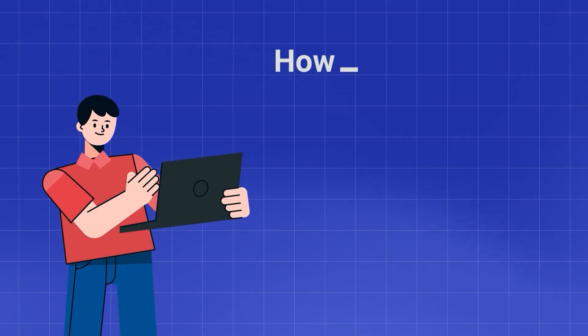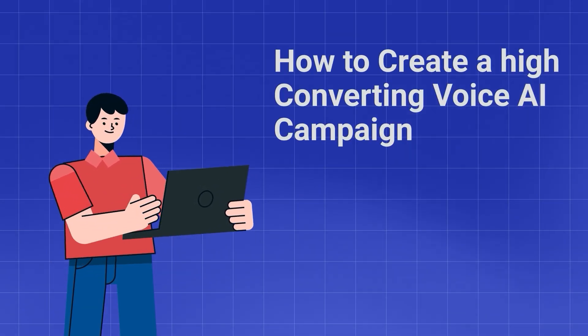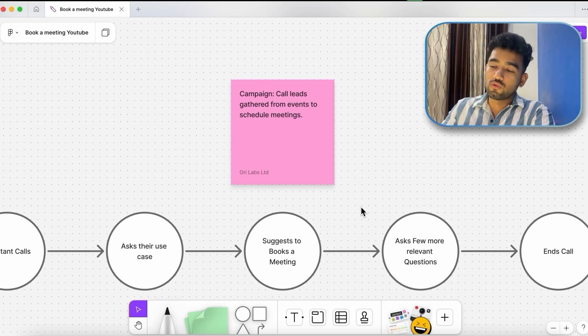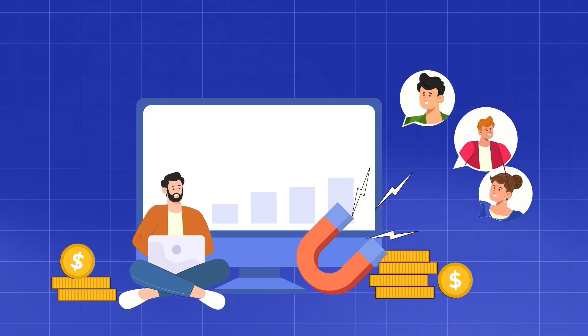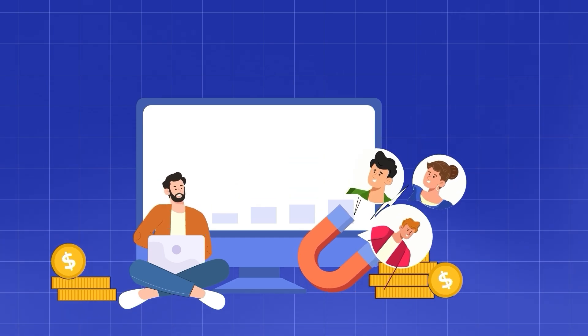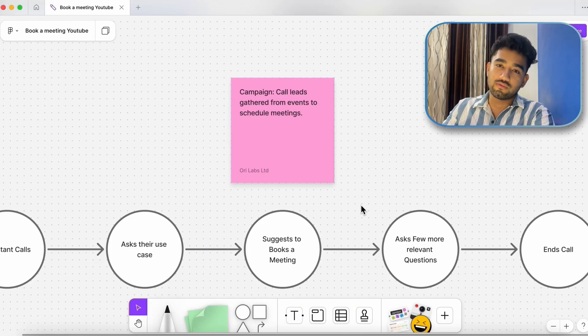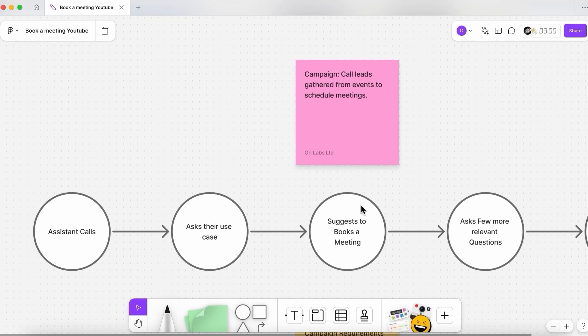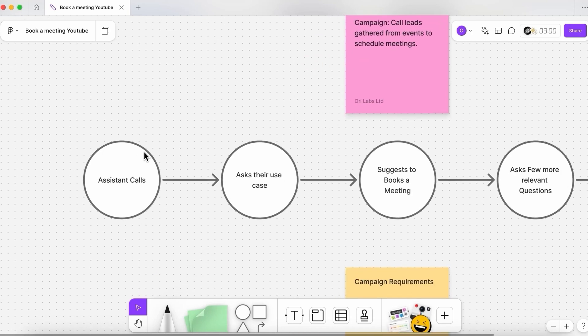So in this video, I'll walk you through how to create a high converting voice AI campaign that can call, qualify, and book meetings for you while you focus on other tasks. Now let's dive into how it works. Before we go into the VoiceGenie platform, I'll just give you an overview of the campaign we are going to run. We are going to run this campaign on leads that were collected from an event. We're taking the hypothesis that there was an event and a number of people interacted with the VoiceGenie team and we got their contact details.